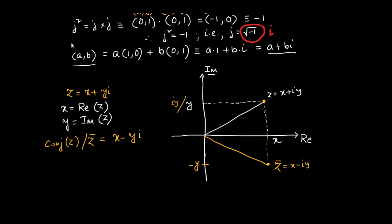The absolute value of Z, or the modulus of Z, denoted |Z|, is √(X² + Y²). This is straightforward from the diagram: the length along the real axis is X and along the imaginary axis is Y, so by the Pythagorean theorem the distance from the origin to Z is √(X² + Y²). These are the elementary ideas of complex numbers — this is how we visualize the conjugate and what we mean by absolute value or modulus.